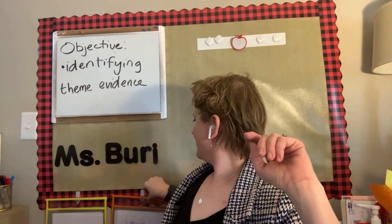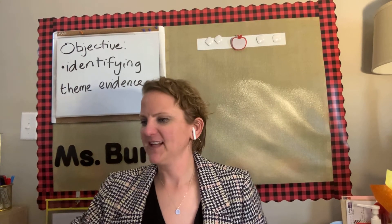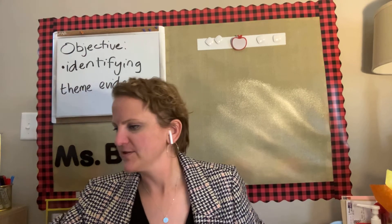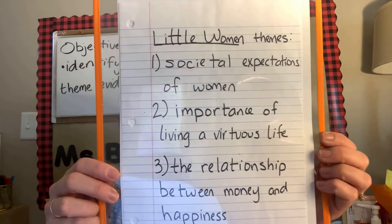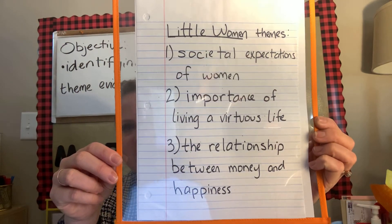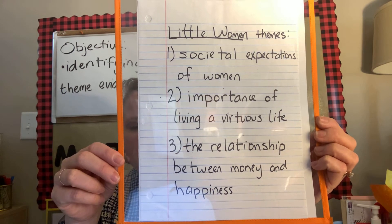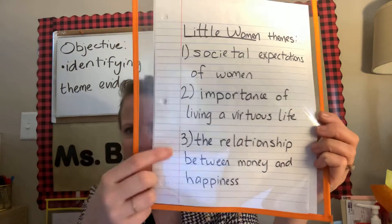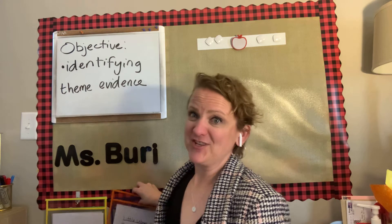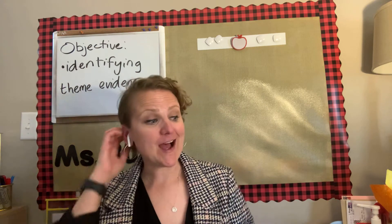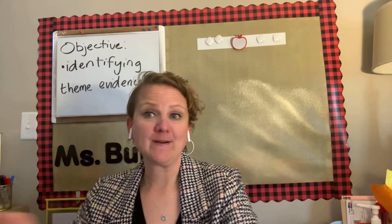For today, our main objective is going to be identifying theme evidence. We will also keep working on the skill of selecting quotes to support our answers. As a reminder, these are the three themes we've been discussing as we've read Little Women: one, the societal expectations of women at the time; two, the importance of living a virtuous life; and three, the relationship between money and happiness. This is really a question Louisa May Alcott is posing: does money lead to happiness or not? Some characters believe so; others very firmly do not.